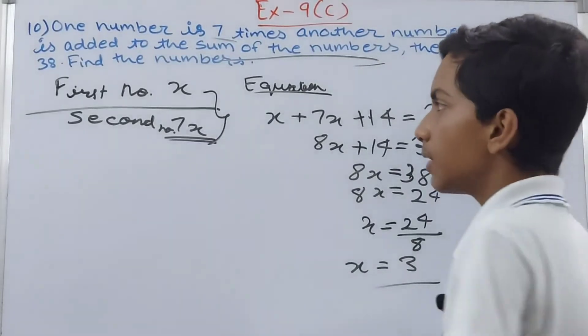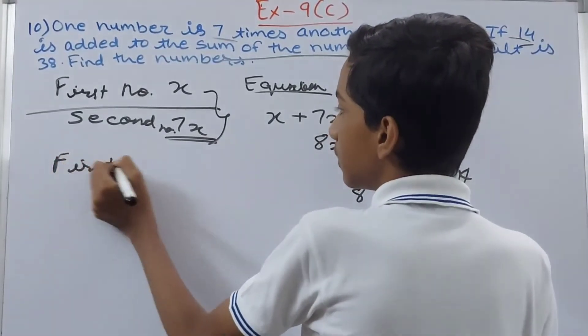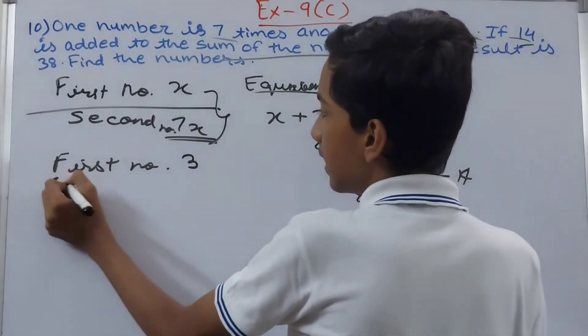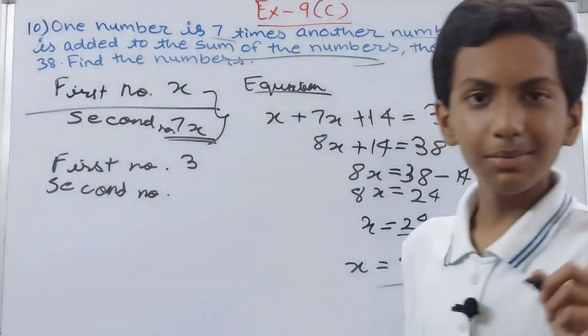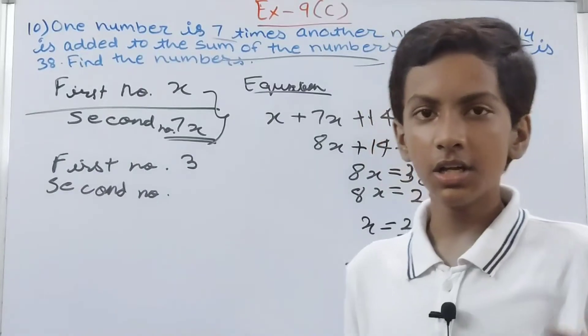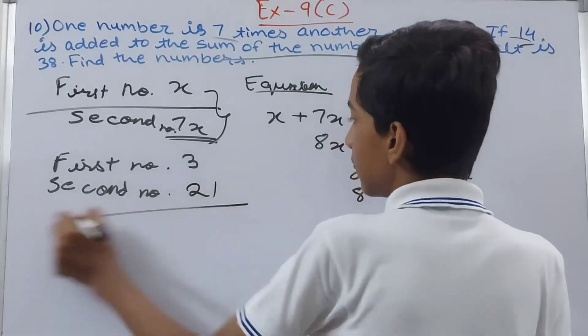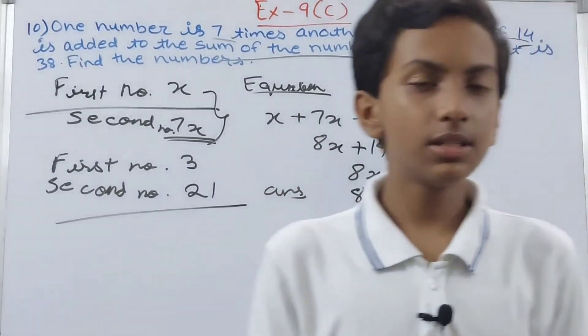So you can write it here that our first number is 3, and second number is 7 times 3. 7 times 3 is 7 into 3 basically, and that is 21. This becomes our answer.